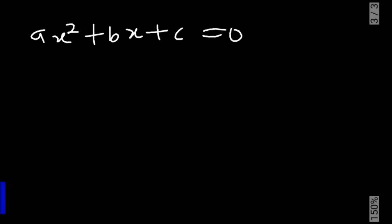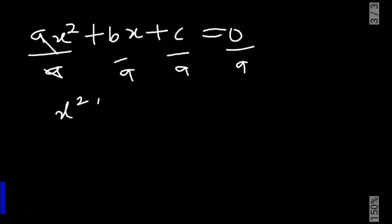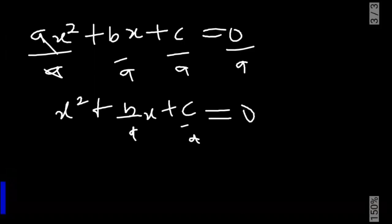The first thing we are going to do is to make sure the coefficient of x squared is 1, so we divide by a. Now we have x squared plus b over a times x plus c over a equals 0. 0 divided by a is 0.